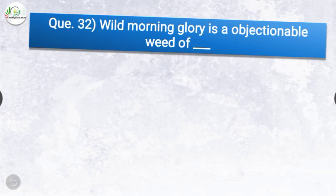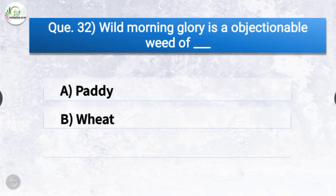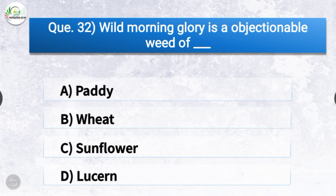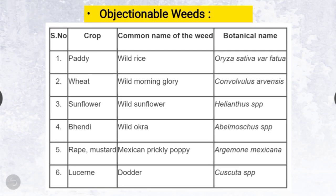Question number thirty-two: Wild morning glory is an objectionable weed of — the options are paddy, wheat, sunflower, or lucerne. The correct answer is option B — wheat. Objectionable weed plants are weeds whose seeds are difficult to separate once mixed, causing mechanical admixtures. For paddy: wild rice (Oryza sativa var. fatua); for wheat: wild morning glory (Convolvulus arvensis); for sunflower: wild sunflower (Helianthus species); for bhindi: wild okra (Abelmoschus species); for rape and mustard: Mexican prickly poppy (Argemone mexicana); for lucerne: dodder (Cuscuta species).